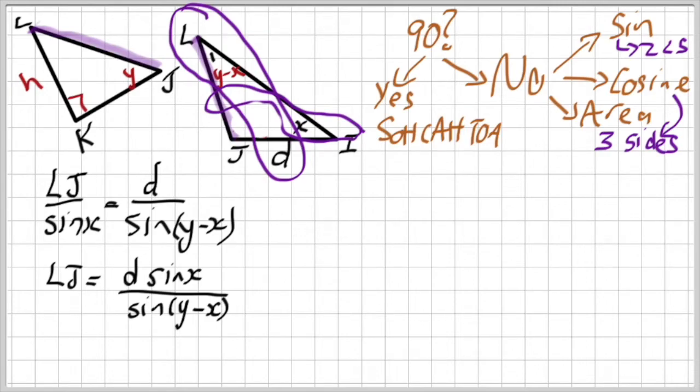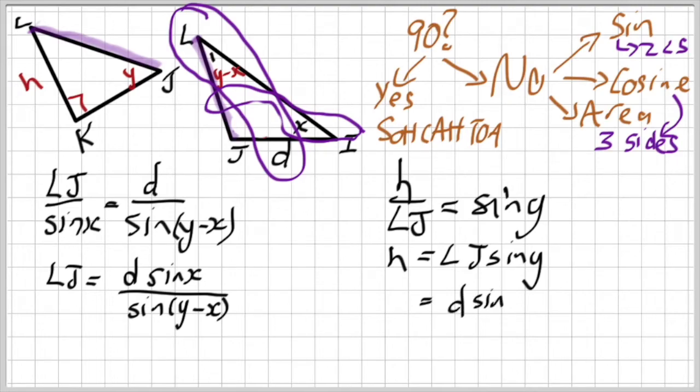Now, with triangle KLJ, there's a 90 degrees. So, I'm going to work with SOCATOA. So, I'm going to say, well, H over LJ is going to be opposite over hypotenuse. And this is going to be sine of angle y. Multiplying both sides by LJ, I've got H to be LJ sine of y.